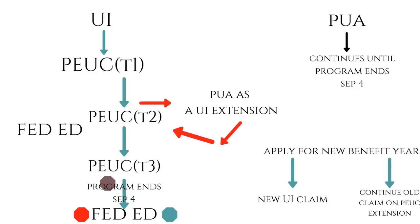For those migrated back from a PUA extension to PEUC, you will remain on PEUC until it ends. If you have a lapse in your PEUC extension before you get to the next tier, Fed Ed may kick in if you qualify — you may receive a notification stating that you qualify for and will be receiving Fed Ed. You would then exhaust the full up to 20 weeks of Fed Ed benefits, and following that exhaustion, if there are remaining weeks left in PEUC leading up to claim week ending September 4, you would receive those additional PEUC weeks before the program ends.